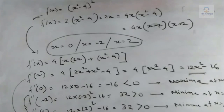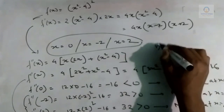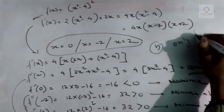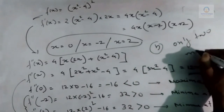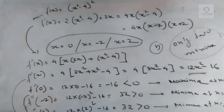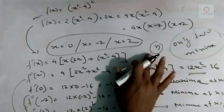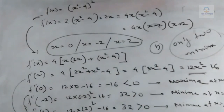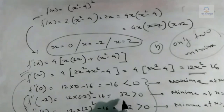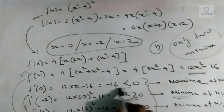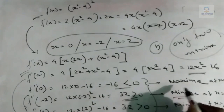We have two minima at x = -2 and x = 2, so the correct option is B — only two minima. The general rule: equate f'(x) to zero to find critical points, then substitute into f''(x). If f''(x) > 0, that point is a minima; if f''(x) < 0, that point is a maxima.